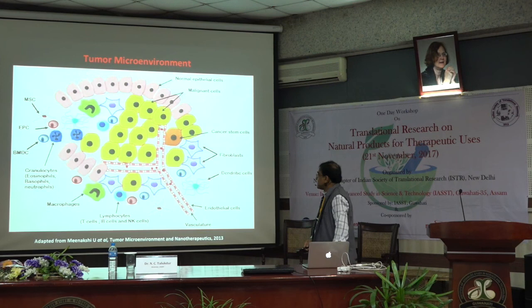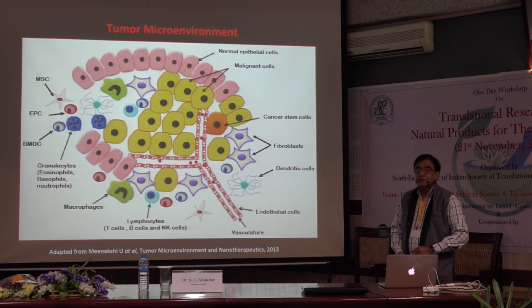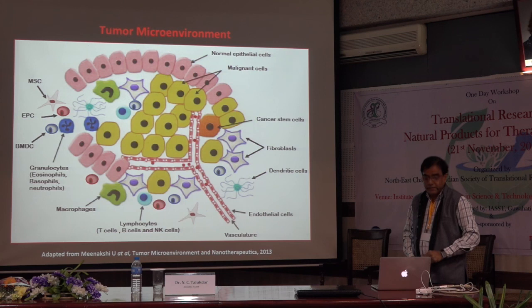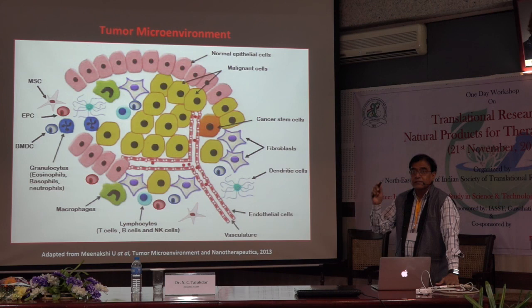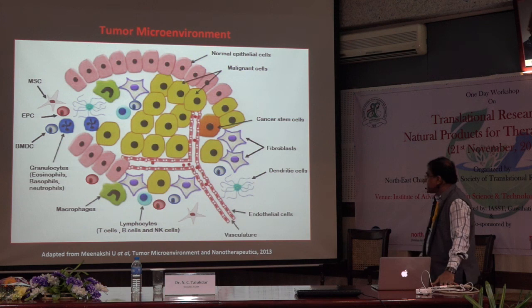Coming to cancer, like many other diseases, one has to understand that within the tumor microenvironment there is a lot of heterogeneity. There are different kinds of cells. People earlier thought only cancer cells within cancer tissues were involved in the development of cancer and should be targeted, but that is not the way cancer research is going on globally today. There are many stromal cells, many immune cells like macrophages, T cells, B cells, and NK cells.